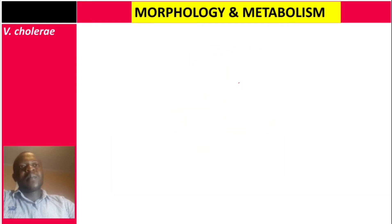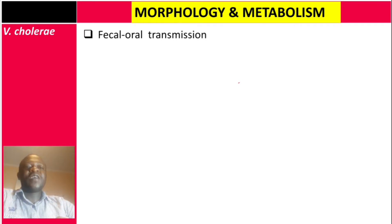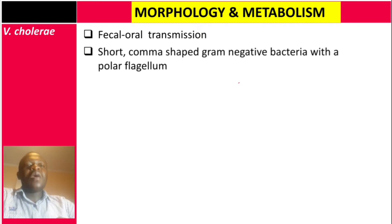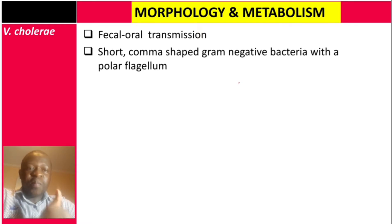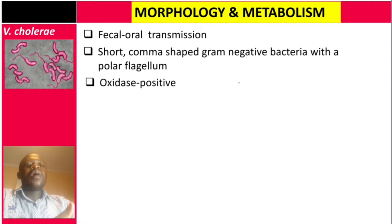Let's start with the morphology and metabolism of Vibrio cholerae. Firstly, how is this bacteria transmitted? It's via the fecal-oral route. This bacteria is a short, comma-shaped, gram-negative bacteria with a single polar flagellum. You can see here a single flagellum on one end. As mentioned, it is an oxidase-positive bacteria.